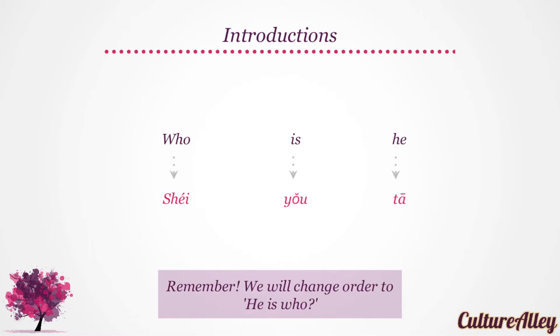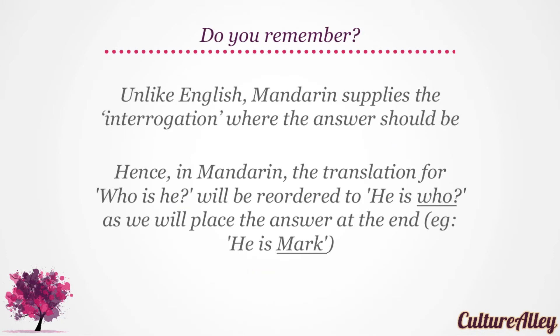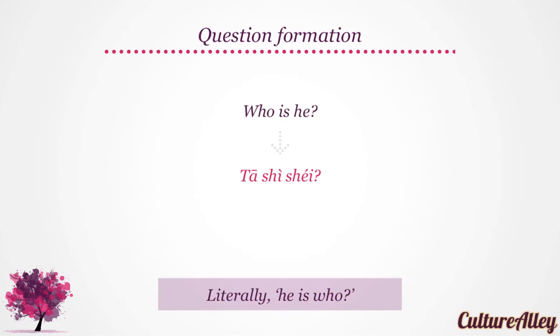Similarly, who is he translates to 他是谁? — literally meaning he is who. So remember that, unlike English, Mandarin supplies the interrogative where the answer should be. Hence, in Mandarin, the translation for who is he will be reordered to he is who, as we place the answer at the end of the question. He is Mark. Thus, who is he translates to 他是谁? — literally meaning he is who.